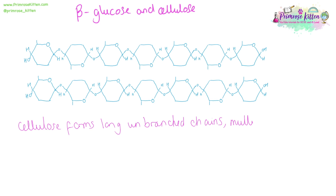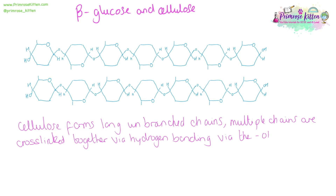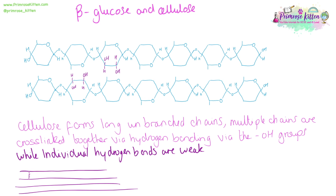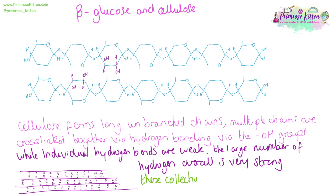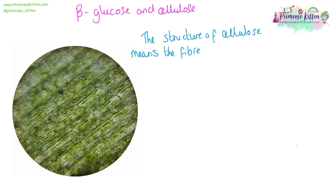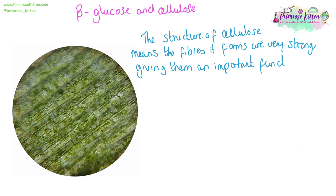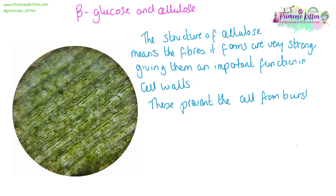Cellulose forms long, unbranched chains. Multiple chains can join together, cross-linked via hydrogen bonding via the OH groups. While individual hydrogen bonds are weak on their own, the large number of hydrogen bonds and cross-links between the chains of cellulose overall makes them very strong. All of these collectively together will form microfibrils. The structure of cellulose means that the fibres it forms are very strong, giving them an important function within the cell walls.